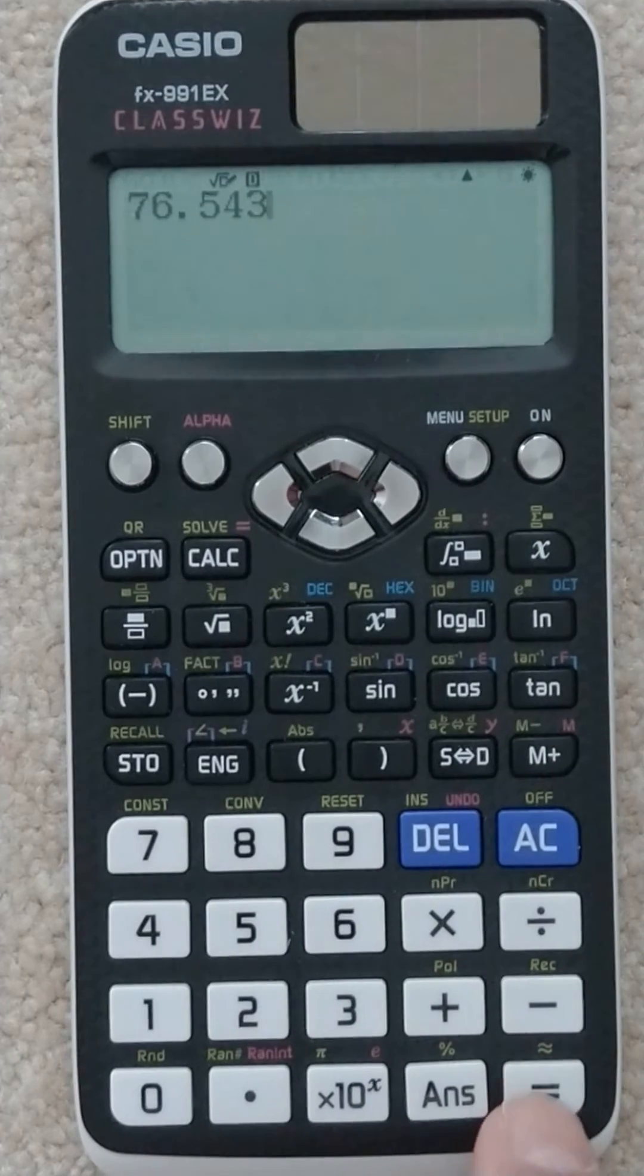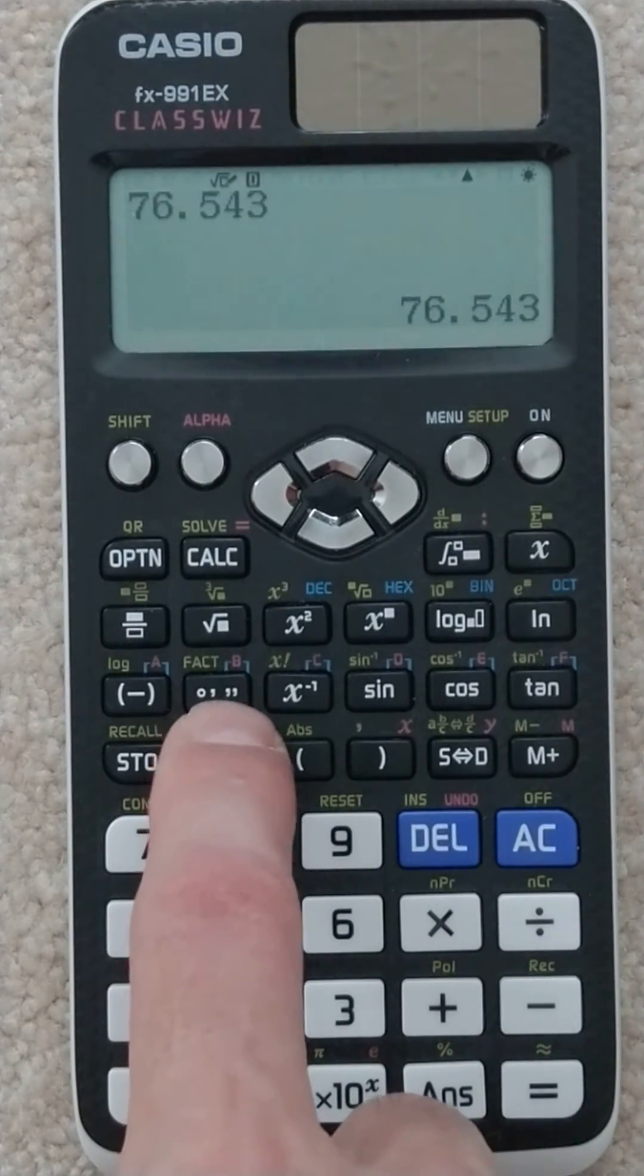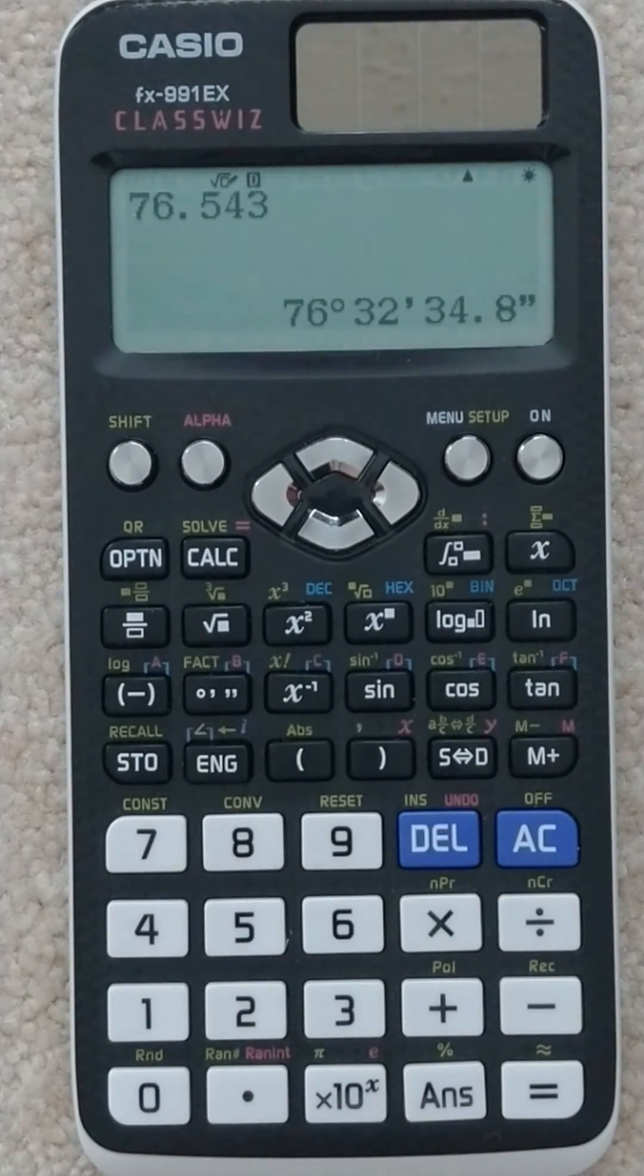You hit equal, and then if I want to change that to degrees, minutes, seconds, all I have to do is hit this button, and it'll change it.